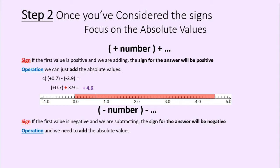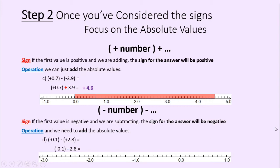Let's show you with an example. From examples A, B, C, D — example D started with a negative value and we are subtracting a positive value from it. When we subtract a positive, the signs are different, so we subtract. We can write negative 0.1 minus 2.8. Starting at negative 0.1 on the number line and subtracting 2.8, I'm going in the negative direction another 2.8, taking me all the way down to negative 2.9. Think about absolute values: 0.1 away from zero plus an extra 2.8 in that negative direction gives us negative 2.9.